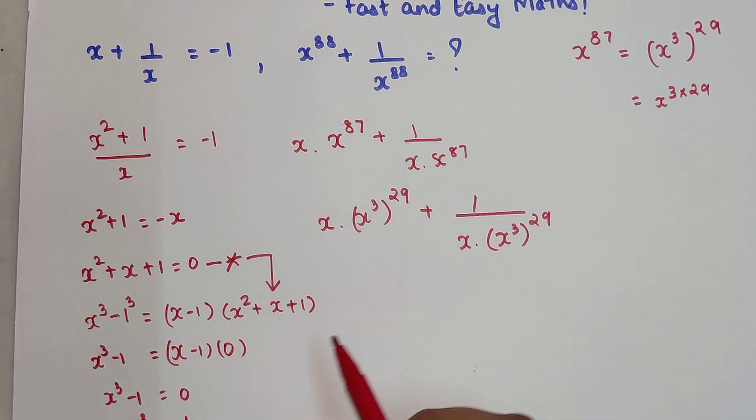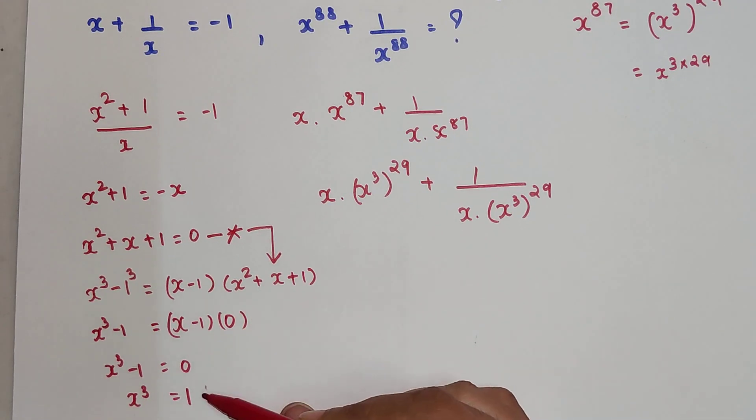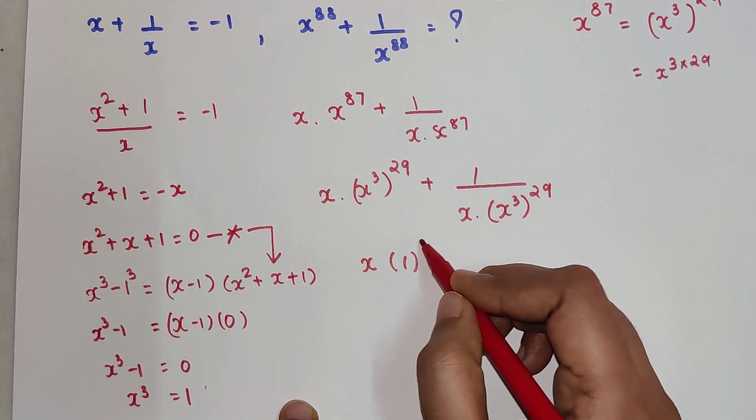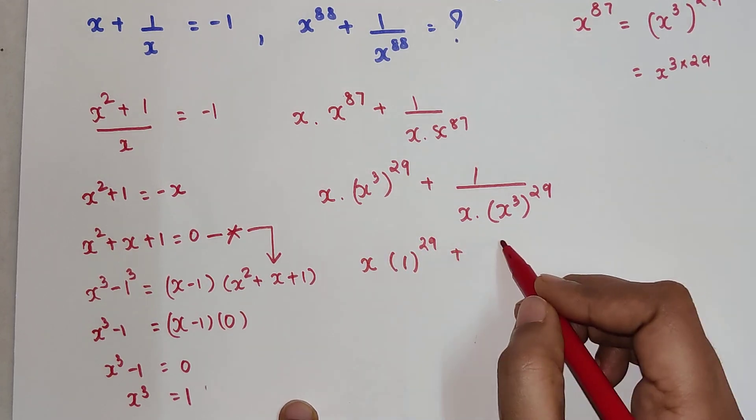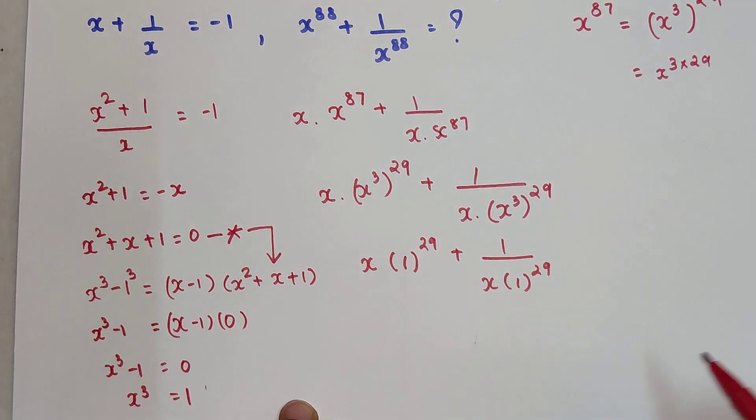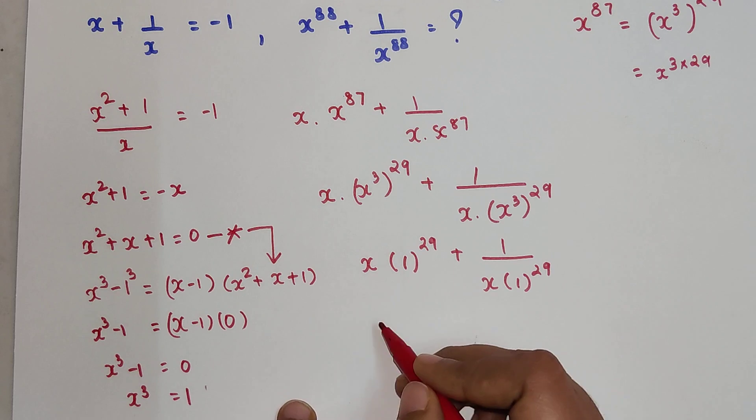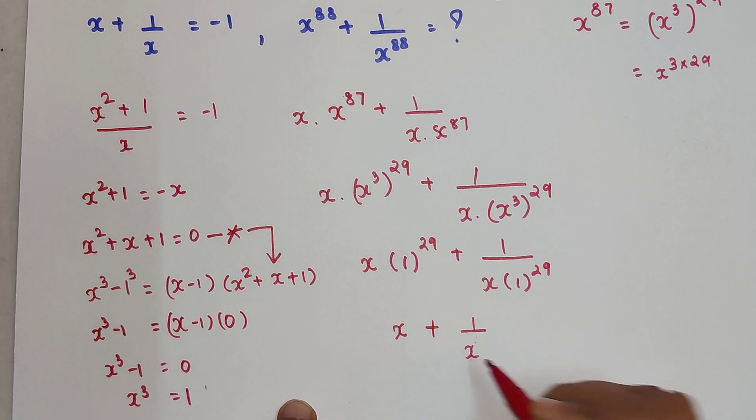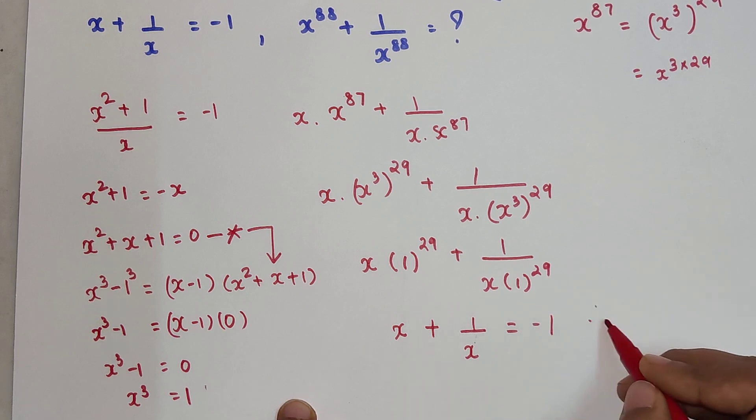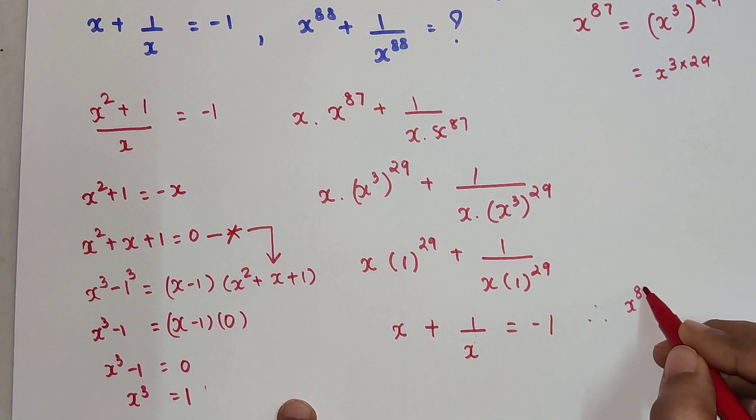Now as we have understood that the value of x³ is 1, we'll put that value over here. So we'll get x·1^29 + 1/(x·1^29). 1 raised to any power will always be 1, so we'll just be left with x + 1/x, and that value is given in the question itself, which is -1.